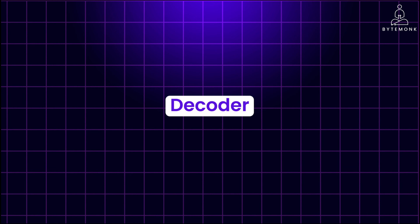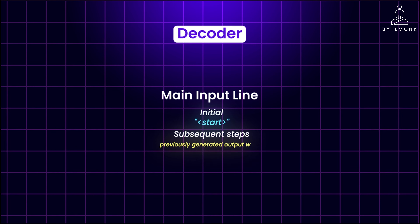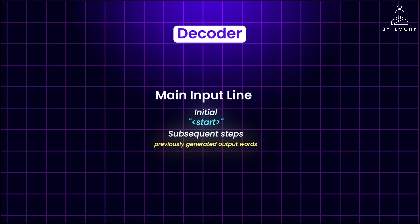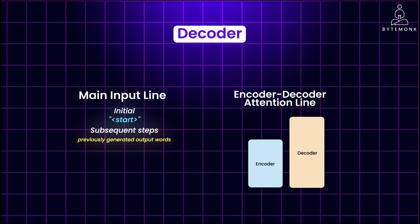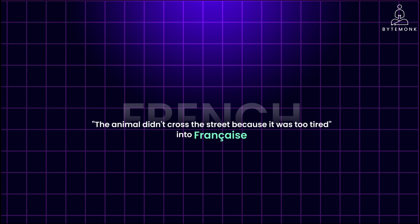Now let's see how the decoder processes the information. The decoder has two input lines. The main input line feeds the decoder: it is initially set to a start token, and in subsequent steps the previously generated output words are fed back to it. The encoder-decoder attention line is a separate line connecting the encoder to the decoder, allowing the decoder to access the encoder's representation of the input sequence through attention — not a direct feed of words. Our goal is to translate 'The animal didn't cross the street because it was too tired' into French.